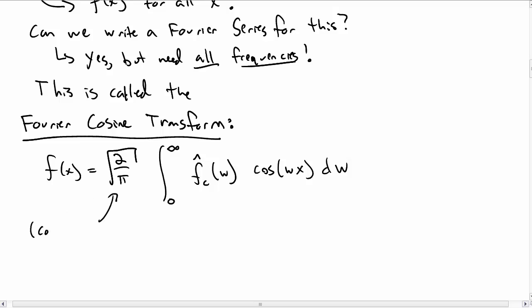The root 2 over π is just a convention, an annoying convention you have to have there. The sum becomes an integral. Previously we had a Fourier series, now we have a Fourier integral.